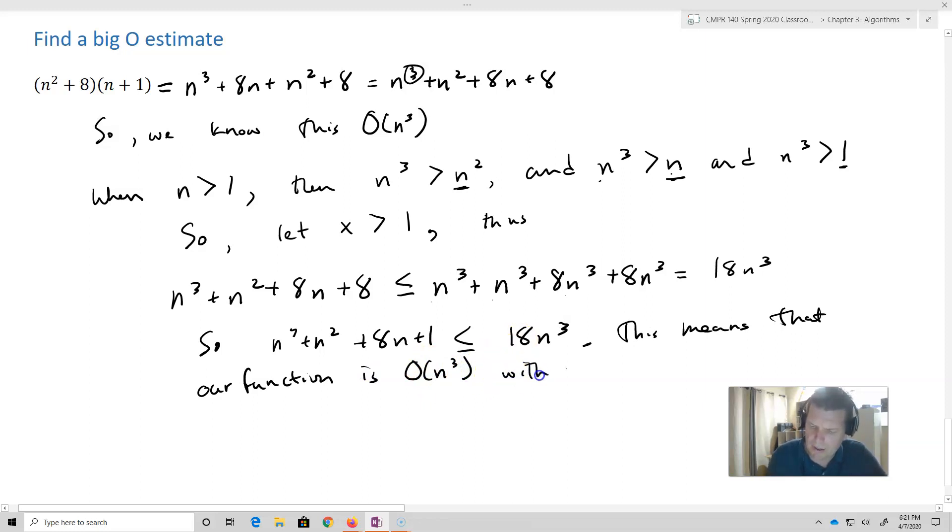With witnesses, here are the witnesses: k = 1 and c = 18. Any value bigger than 1 and any value bigger than 18 is also going to end up being a witness or a set of witnesses. It's just fine, as long as you get bigger than those guys.